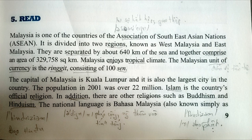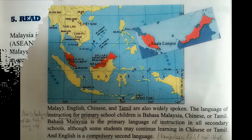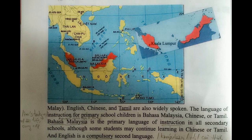Islam is the country's official religion. In addition, there are other religions such as Buddhism and Hinduism. The national language is Bahasa Malaysia, also known simply as Malay. English, Chinese, and Tamil are also widely spoken. The language of instruction for primary school children is Bahasa Malaysia, Chinese, or Tamil.